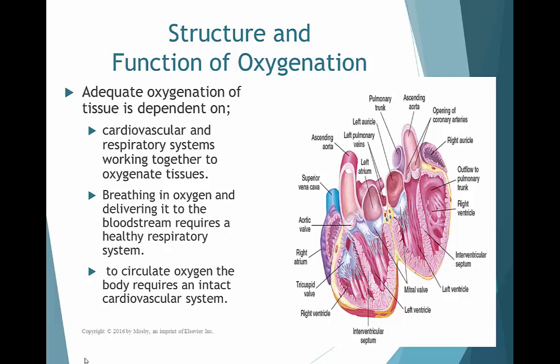Let's look at the structure and function of oxygenation. We need adequate oxygenation of our tissues, and this process is dependent on two systems: our cardiovascular system and our respiratory system. That's why we often call this the cardiopulmonary system — those two have to work in conjunction. A change in one can impact the effectiveness of the other, because they work together to oxygenate tissues. Breathing in oxygen and delivering it to the blood requires both a healthy respiratory system and an intact cardiovascular system to circulate that oxygenated blood.